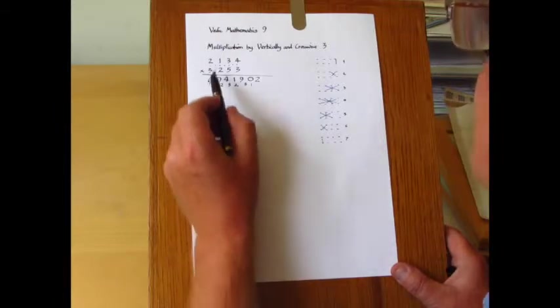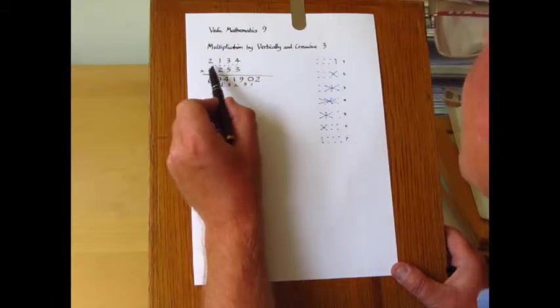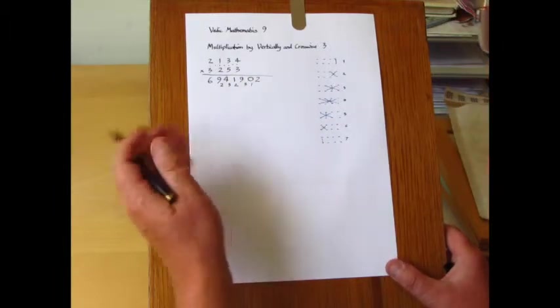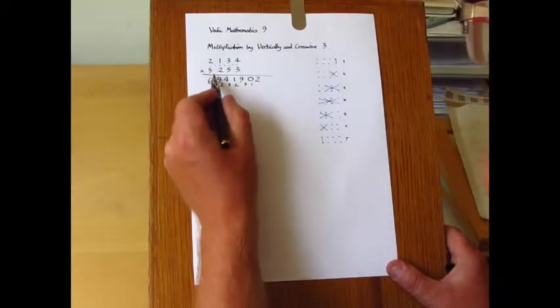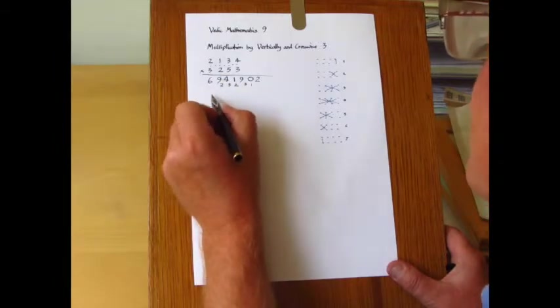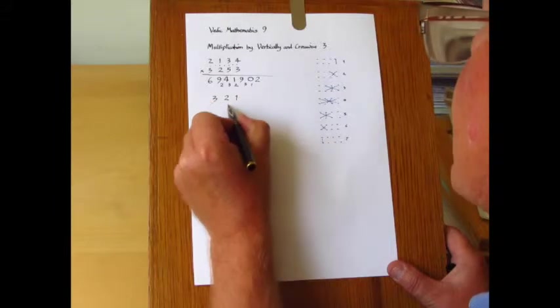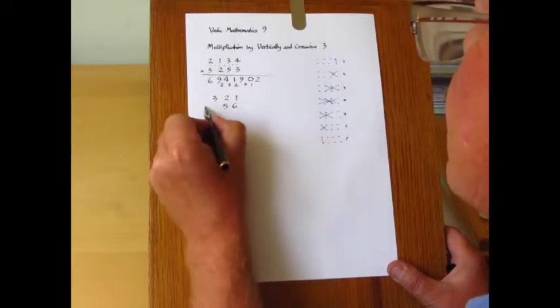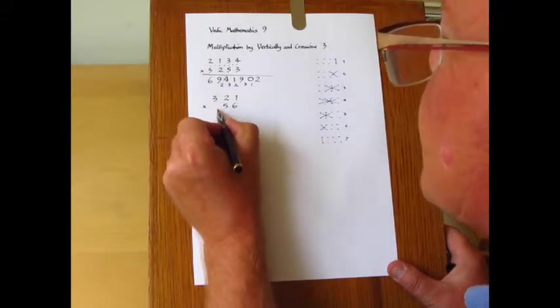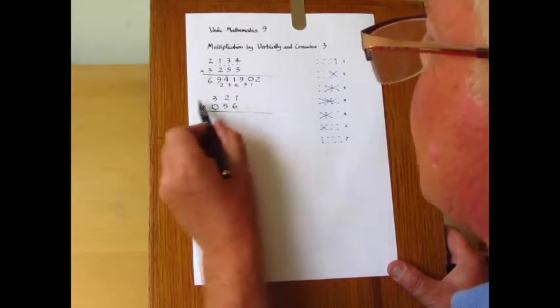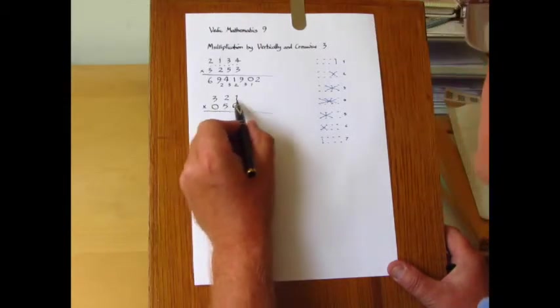If you're multiplying numbers together where they're not the same number of digits in either number you can always place a zero as a placeholder if you like. So for example if you want to multiply two hundred and thirty-one by fifty-six. We could think of a zero here. You could write it in if you like and then just apply the pattern again for three digits.